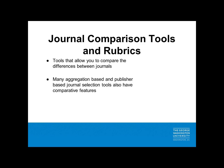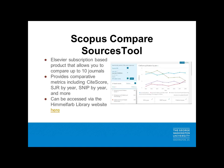I also want to briefly mention tools that allow you to compare the differences between journals. Many aggregation-based and publisher-based journal selection tools also have comparative features, but tools such as the Scopus Compare Sources tool give you a more comprehensive overview of differences between specific titles. The Scopus Compare Sources tool is part of a subscription-based product created by Elsevier that allows you to compare up to 10 journals. Comparative metrics include the CiteScore, JSR by year, SNP by year, and more. This tool does a nice job of letting you see differences displayed as charts or tables, and also provides more recent data than some other resources.